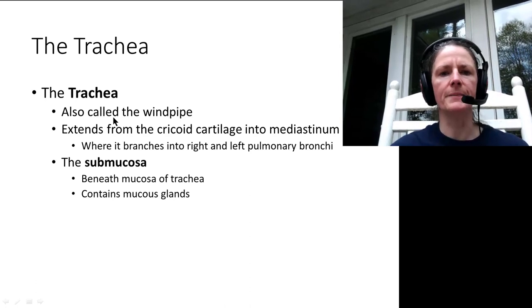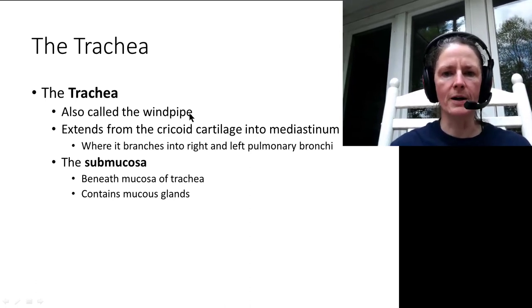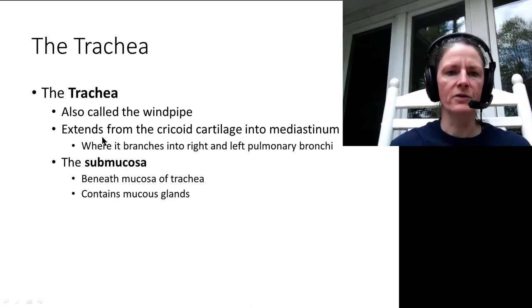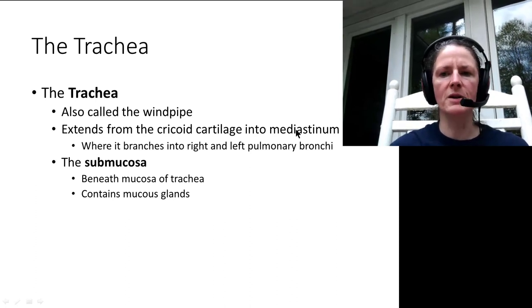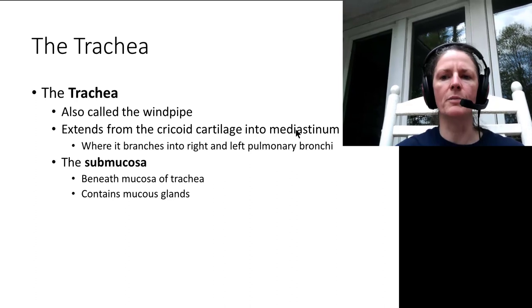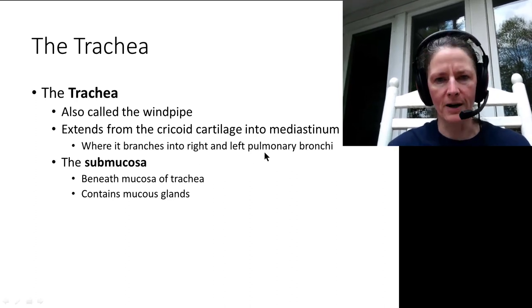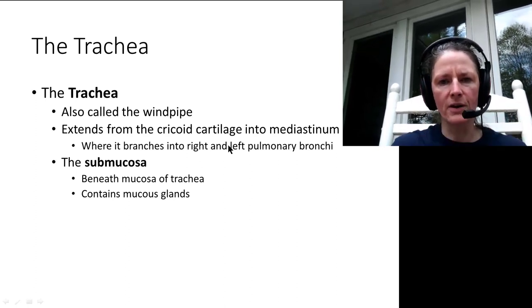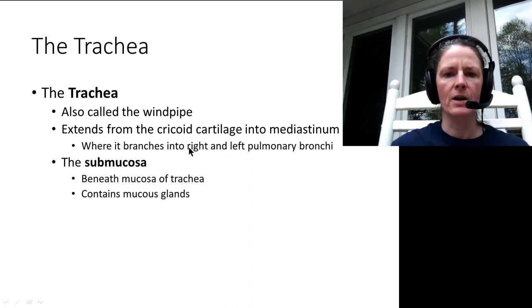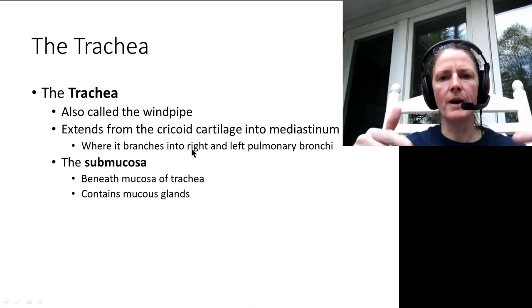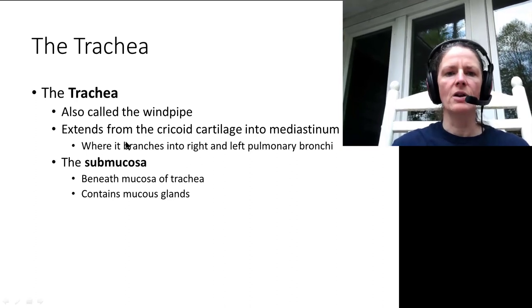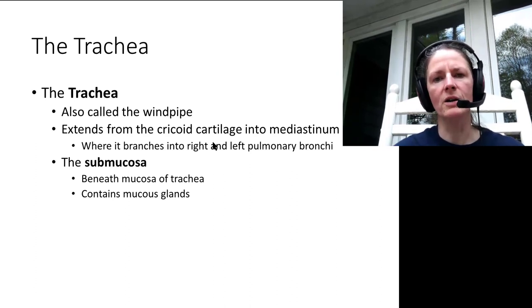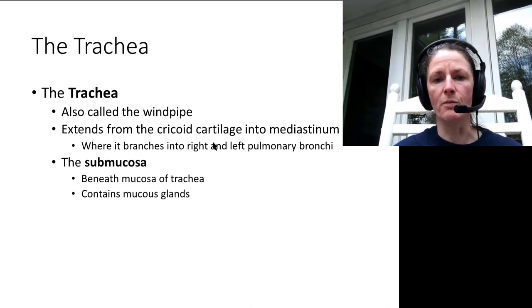The trachea — colloquially known as the windpipe — is the part you intubate into. It extends from the cricoid cartilage down into the mediastinum, then branches into the left and right primary bronchi. A little notch where they separate is called the carina. All of these are supported and kept open by tracheal cartilages. As we branch further, the cartilaginous rings become more like cartilaginous plates, then give way to smooth muscle.